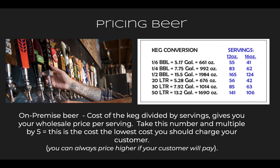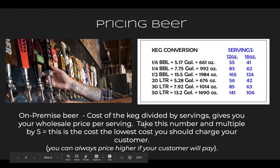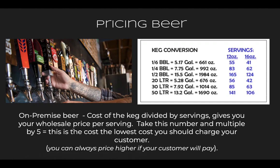For on-premise beer pricing: take the cost of the keg, divide by the number of servings to get your wholesale price per serving, then multiply that number by five — that's the lowest price you should charge your customer. This higher markup helps bars and restaurants cover expensive operating costs. Beer, spirits, and wine have a longer shelf life than perishable food items like meat or vegetables, but charging a higher price point for beverages helps make up the difference. When it comes to beer, you're looking at about a 500% margin — that's what multiplying by five represents.